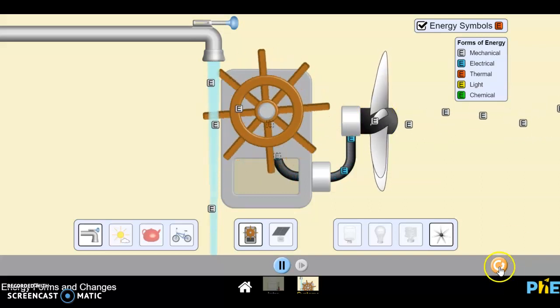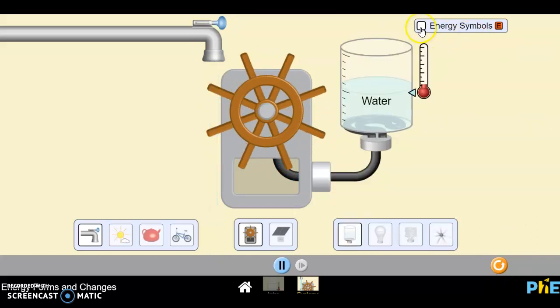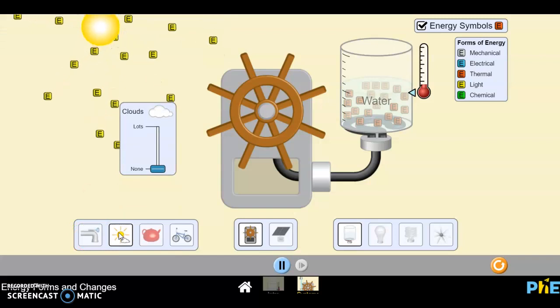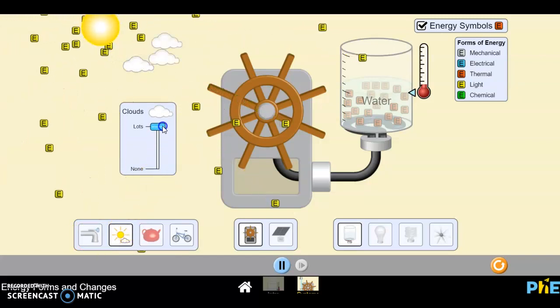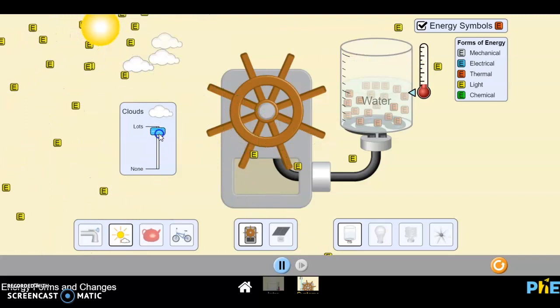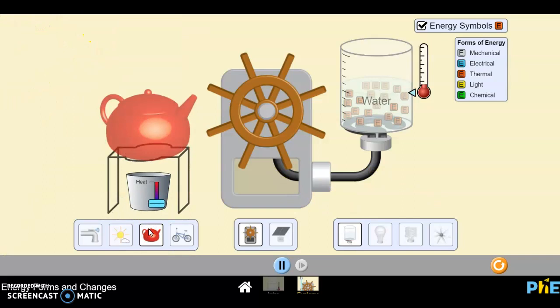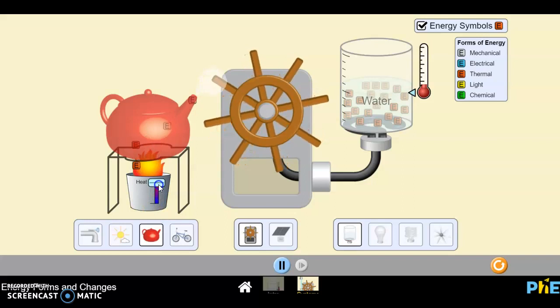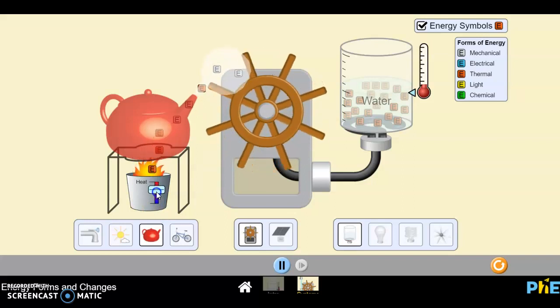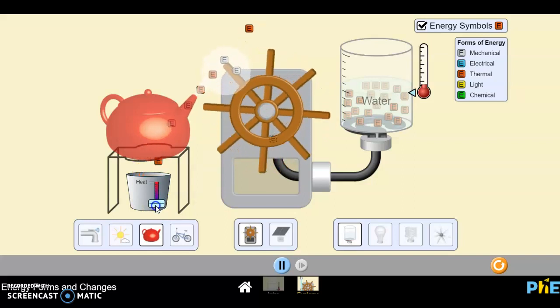So I'm going to hit Reset really quickly, click on Energy Symbols, and just show you some of the choices. You have water, you have light from the sun with no clouds, or lots of clouds, and you can see what that does. We have a teapot, which is going to give us thermal energy when we crank it up, or release the heat.